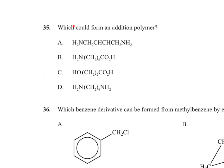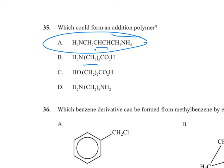Question 35 asks which compound could form addition polymers. Addition polymerisation involves double bonds. Option A has a carbon–carbon double bond, making it suitable for addition polymerisation. Options B and C have no double bonds — option B could form condensation polymers. Option D also has no double bonds. Therefore the answer is A.